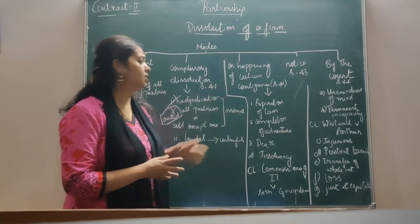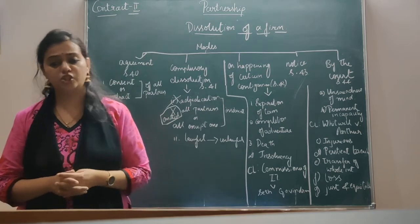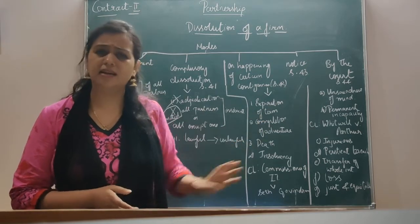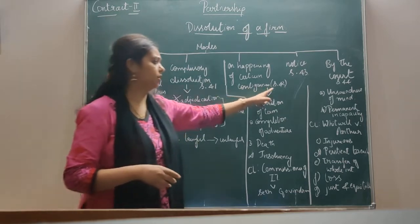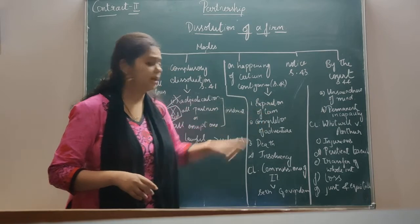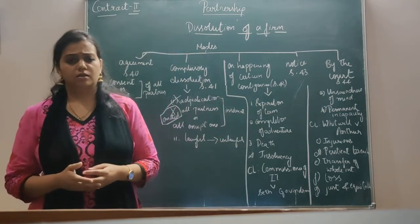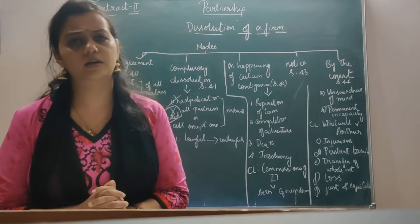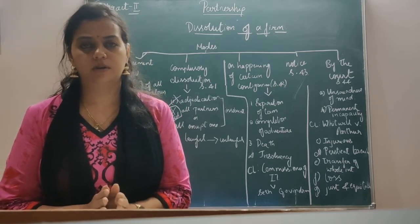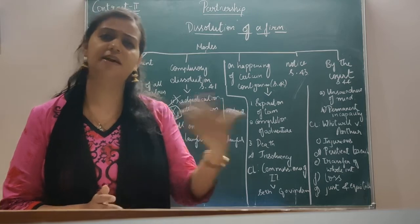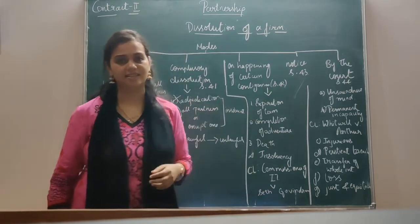The next one is on happening of certain contingencies, given under Section 42 of the Indian Partnership Act — basically it is happening on certain events. The first is on expiration of the partnership term. Suppose the partnership is entered into for 5 years and the 5-year term is over — on expiration of that term, the firm automatically stands dissolved.